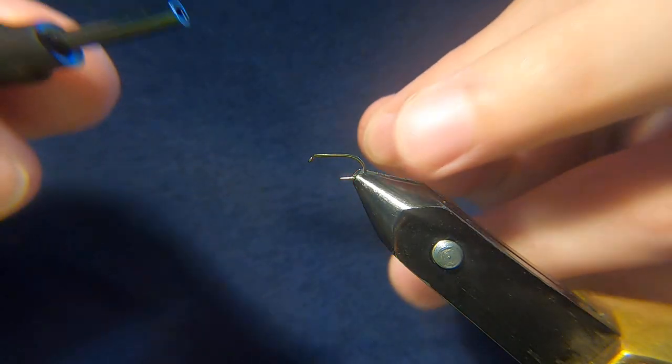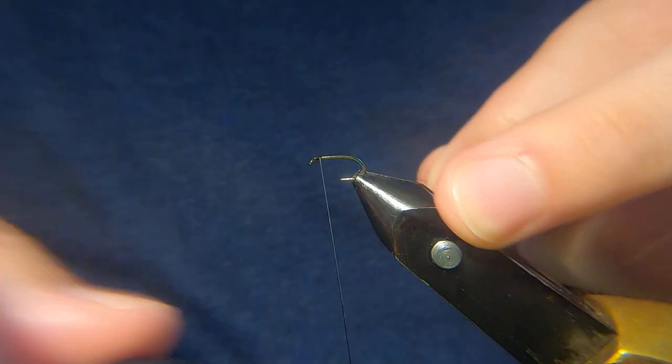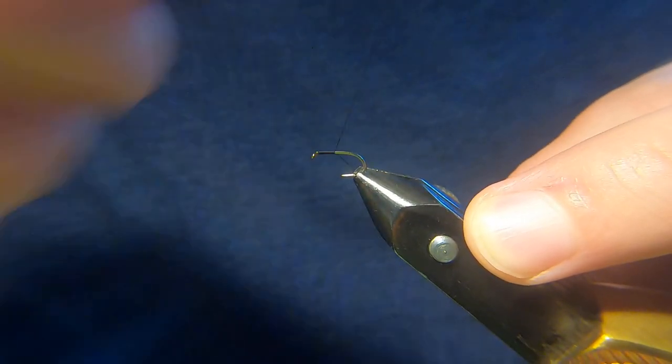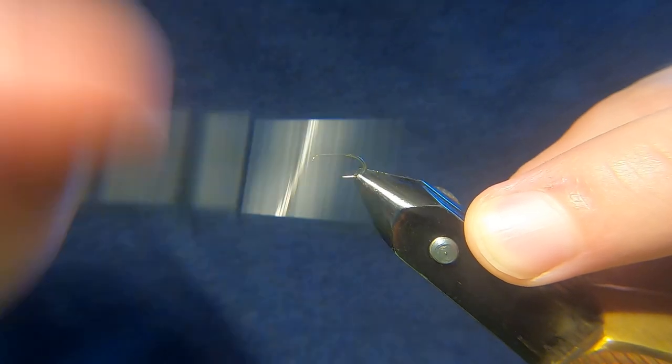This is a black chomper, so we'll just run a layer of thread down. As I say, it's a simple fly to tie, it's only got two materials.